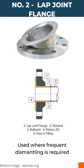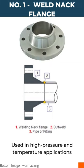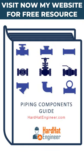Number two is the lap joint flange. The lap flange has two components: a stub end and a loose backing flange. It is used where frequent dismantling is required. The most used flange is the weld neck flange — number one — which is used in high pressure and temperature applications.